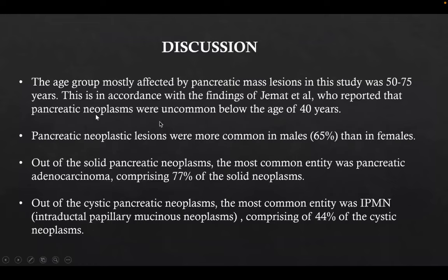The age group mostly affected by pancreatic mass lesions in this study was 50 to 75 years, in accordance with findings of Jamath et al., who reported that pancreatic neoplasms were uncommon below the age of 40 years. Pancreatic neoplastic lesions were more common in males (65%) than in females. The most common solid neoplasm was pancreatic adenocarcinoma (77%), and the most common cystic neoplasm was IPMN (44%).